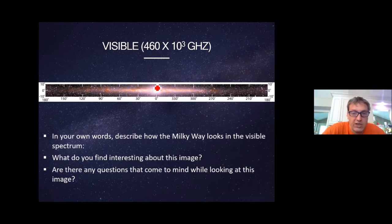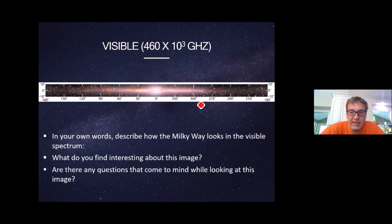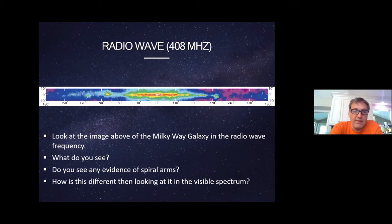As you can see, it looks very disk-like with a kind of a bulge in the middle. In the visible light image, you can see the bulge and that it's very flat and disk-like. We can't necessarily see any spiral arms using the visible, but you can see some evidence of the spiral arms when you look at the other wavelengths.